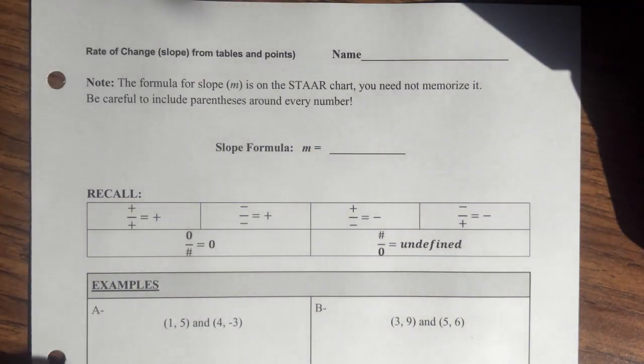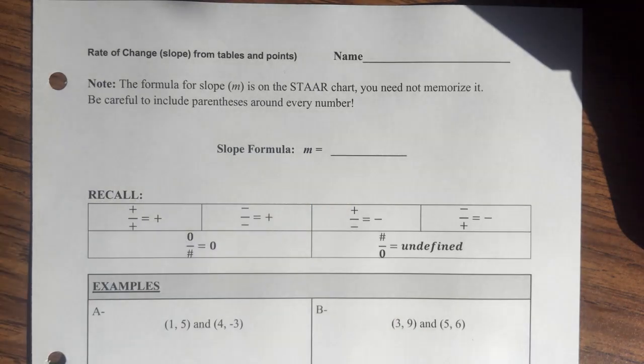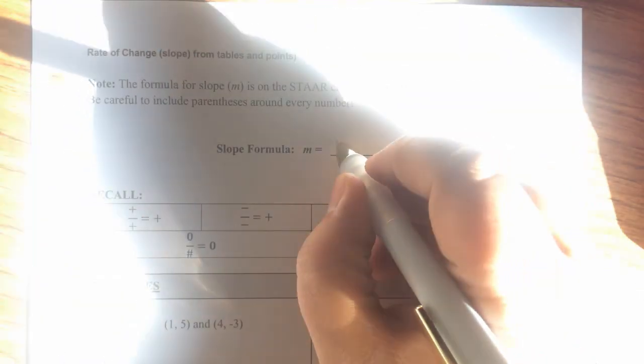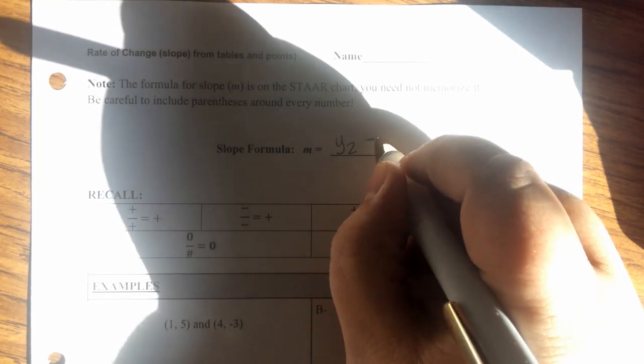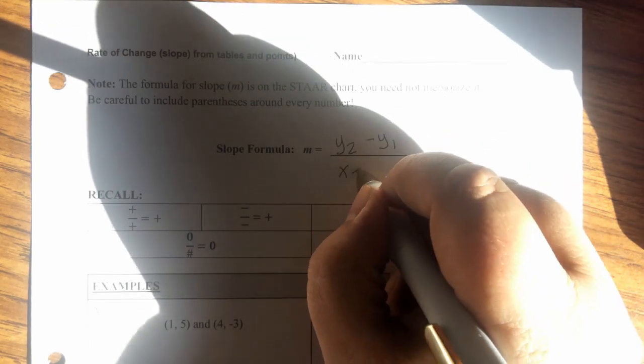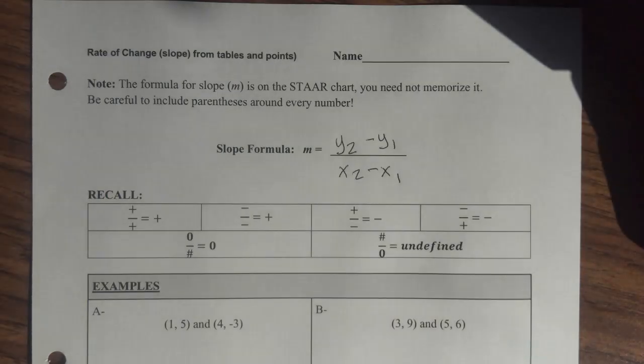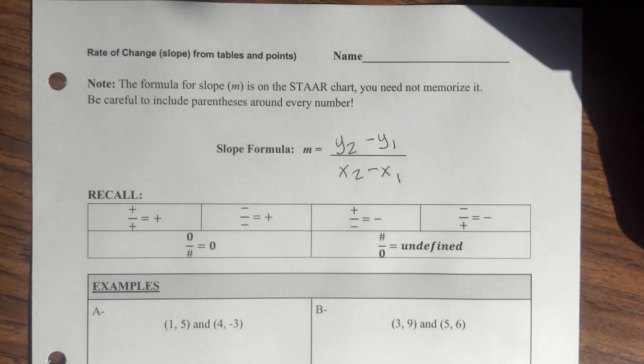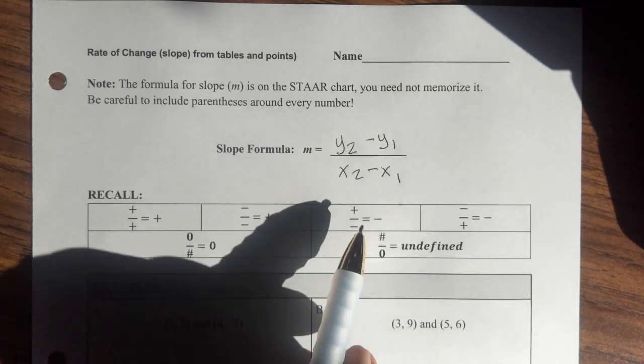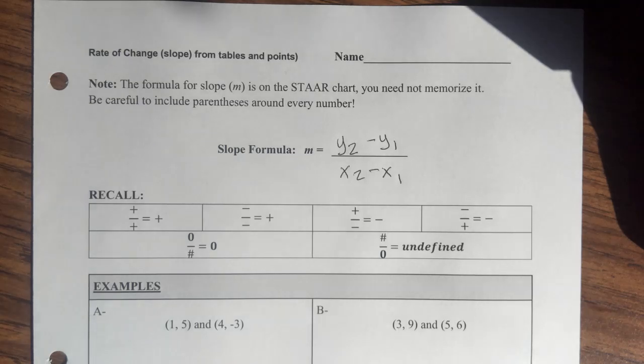Okay, so the slope formula. Do keep in mind this is on your STAAR chart, so you don't have to memorize this. The slope formula is y2 minus y1 over x2 minus x1. You can see a little better. So we get these x and y values obviously from ordered pairs.